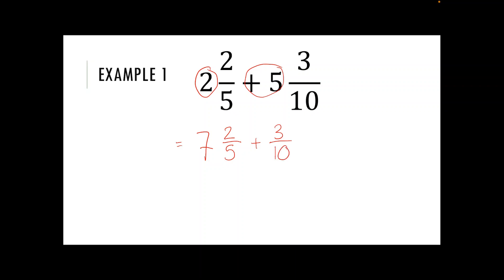Then we go back to what we did in the first video there. So five times by two would get me up to 10, so I need to multiply by two on the top and that's going to give me seven and four tenths plus my three tenths.